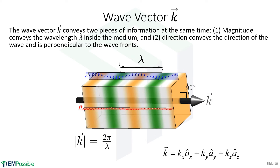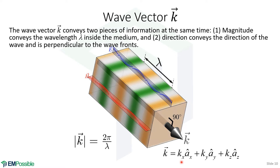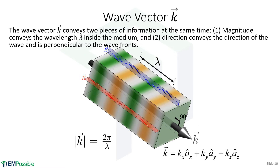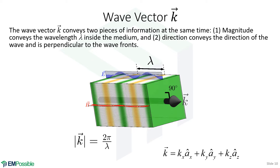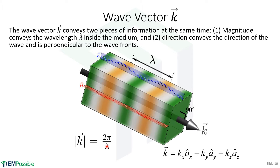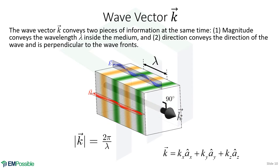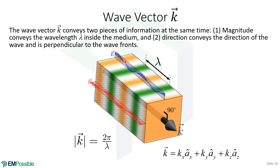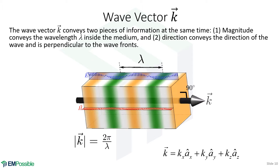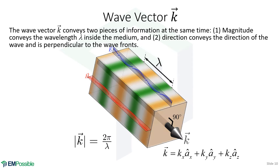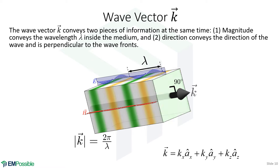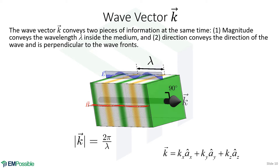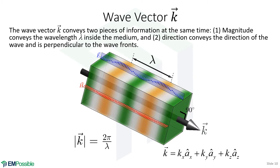The wave number can also be a vector, with components in x, y, and z directions. The magnitude of this wave vector is still 2 pi divided by wavelength, still conveying wavelength. When we're talking about transverse electromagnetic waves in linear, homogeneous, isotropic media, the electric field and magnetic field are always perpendicular to k, and in fact E, H, and k are all orthogonal and perpendicular to each other. So the wave vector conveys two things: magnitude conveys wavelength, and direction conveys how the phase is moving — the movement of the phase fronts.